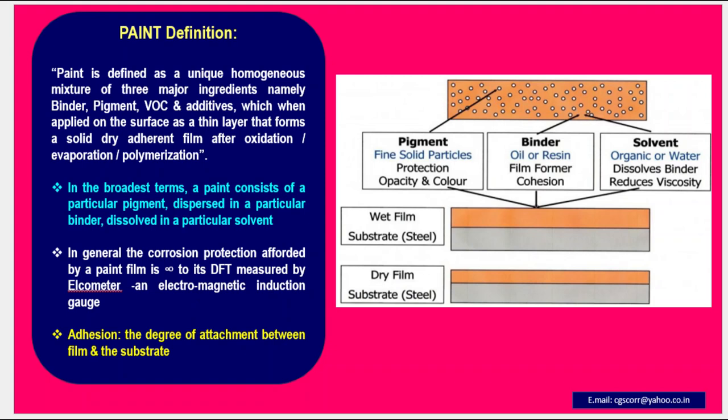In general, the corrosion protection afforded by a paint film is proportional to its dry film thickness, measured by an electromagnetic induction gauge. Adhesion is the degree of attachment between the film and the substrate.